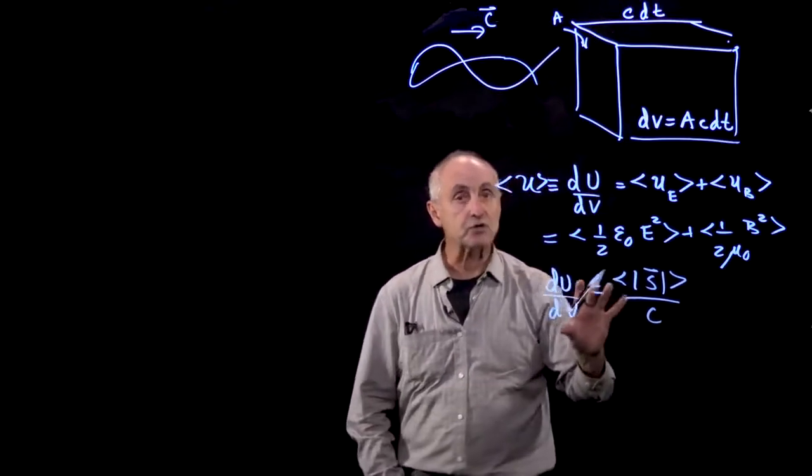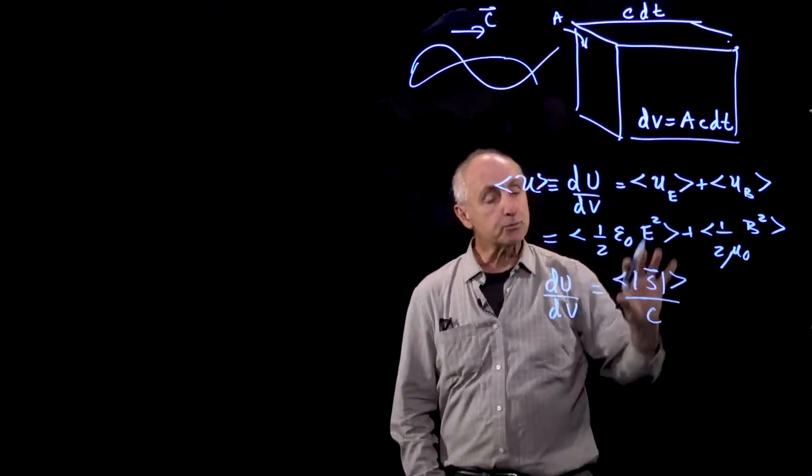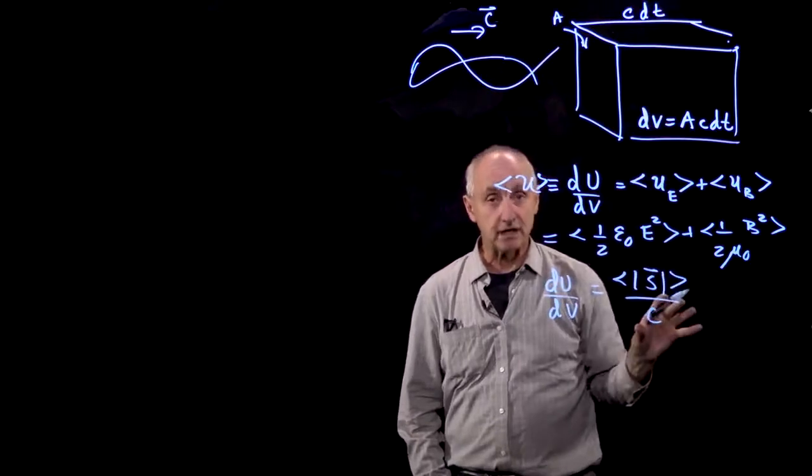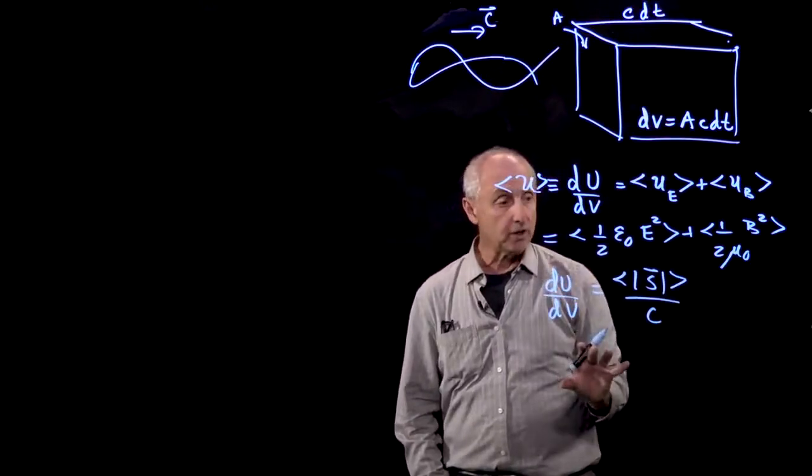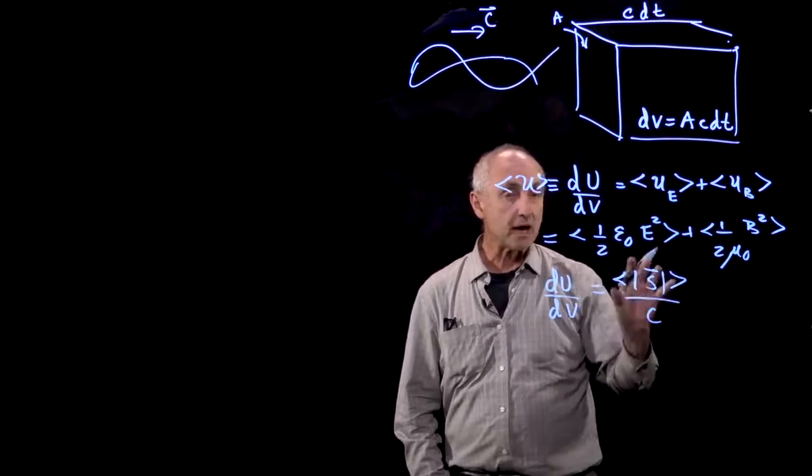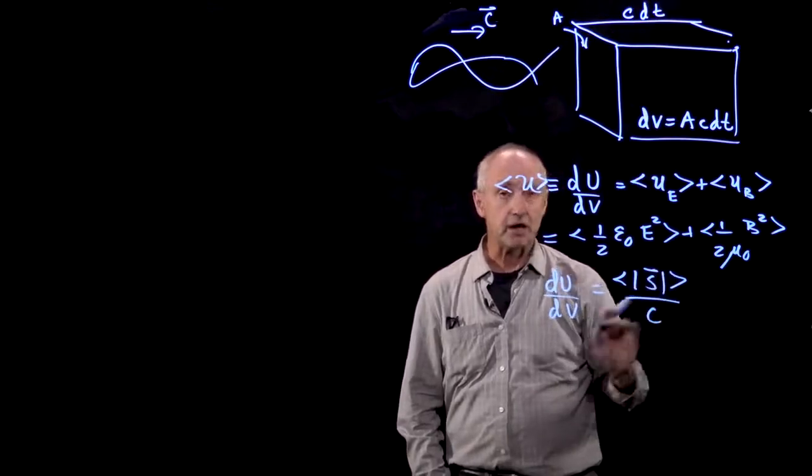So we can interpret this result to say that in any volume of space where there's electric and magnetic fields, there's energy stored, and that amount of energy stored is equal to the magnitude of the Poynting vector divided by c.